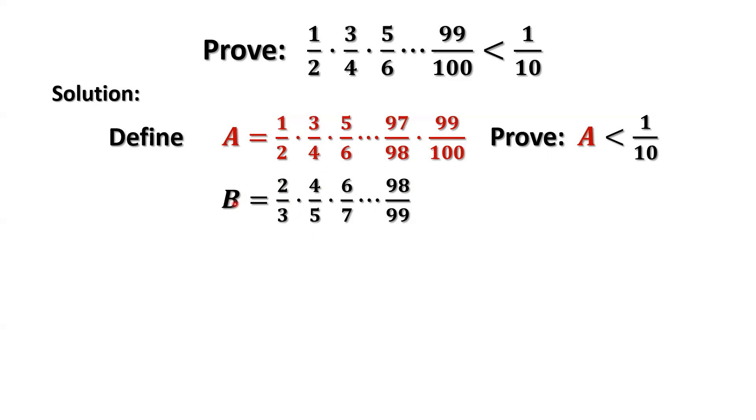We're comparing A with B term by term. 1 half is less than 2 third. 3 over 4 is less than 4 over 5. 5 over 6 is less than 6 over 7. 97 over 98 is less than 98 over 99. Here, we don't have anything here. We can add a 1 here. 1 times B is B. Now we have 99 over 100 is less than 1.